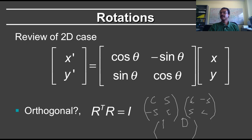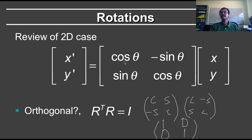Minus sine times cos is minus sine cos, plus cos times sine is plus cos sine, so that equals 0. And finally, minus sine times minus sine gives sine squared plus cos squared, which equals 1. So indeed, that's equal to the identity. What we mean when R transpose R is the identity is that columns and rows are orthogonal. The column dot product with itself, cos squared plus sine squared, is equal to 1.